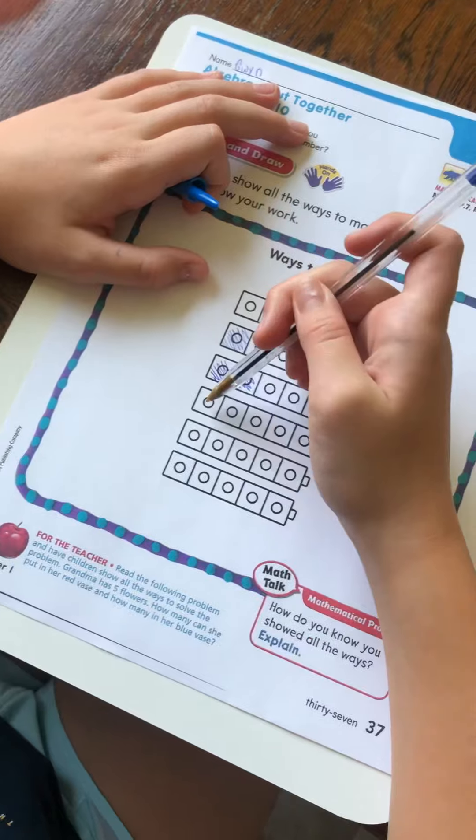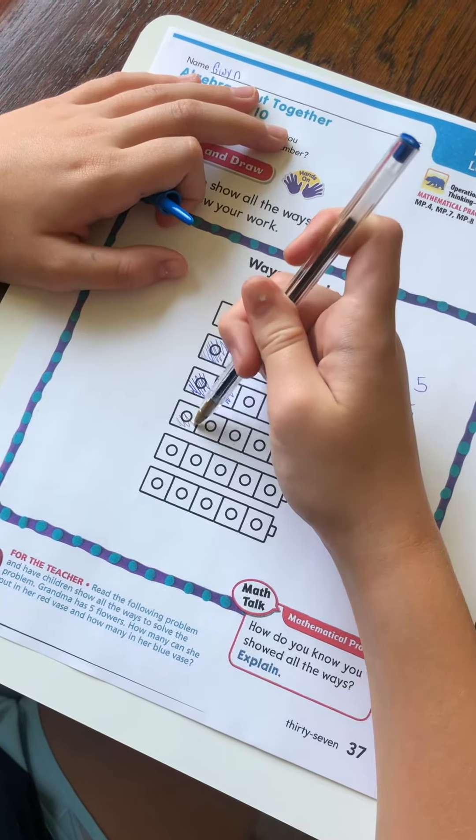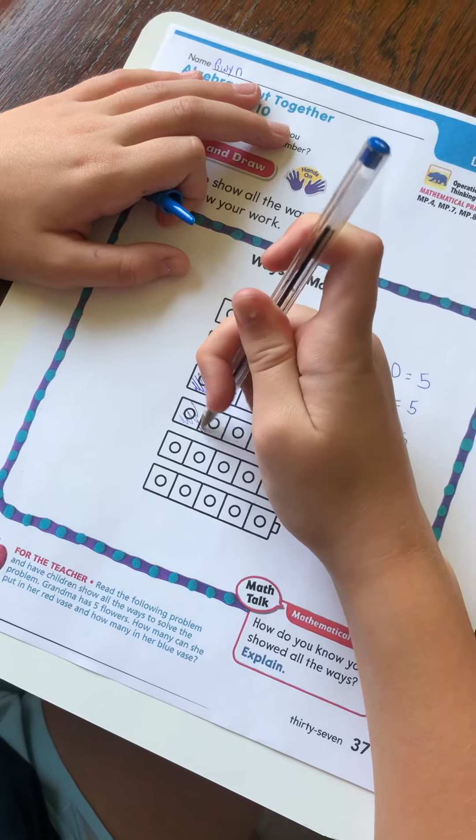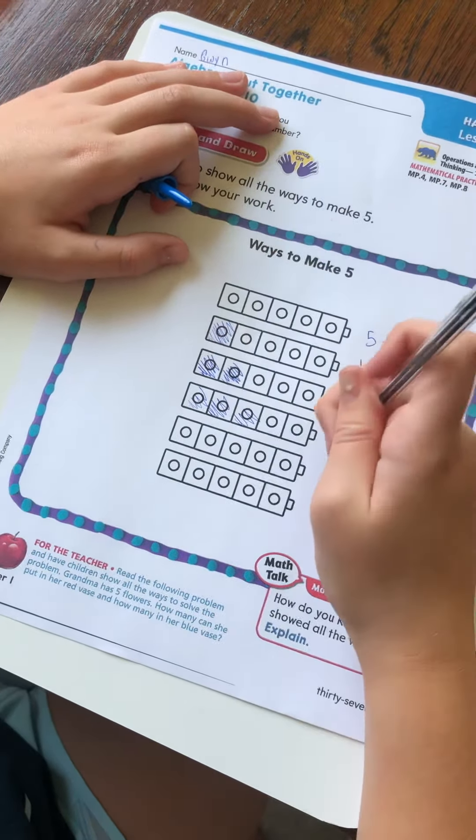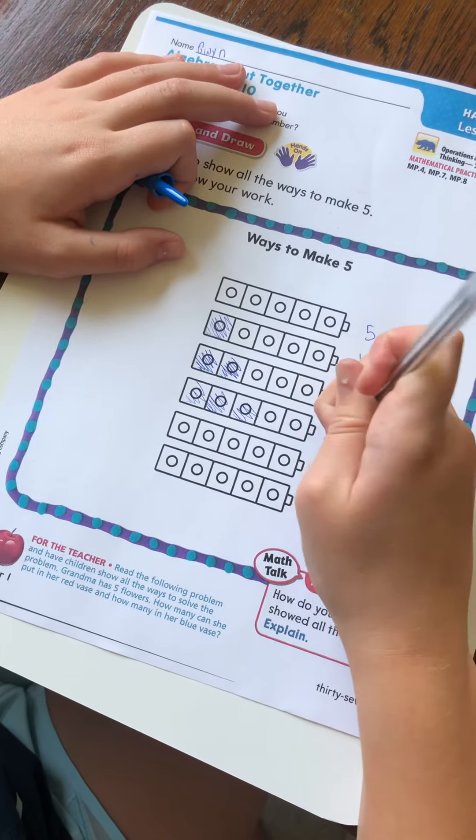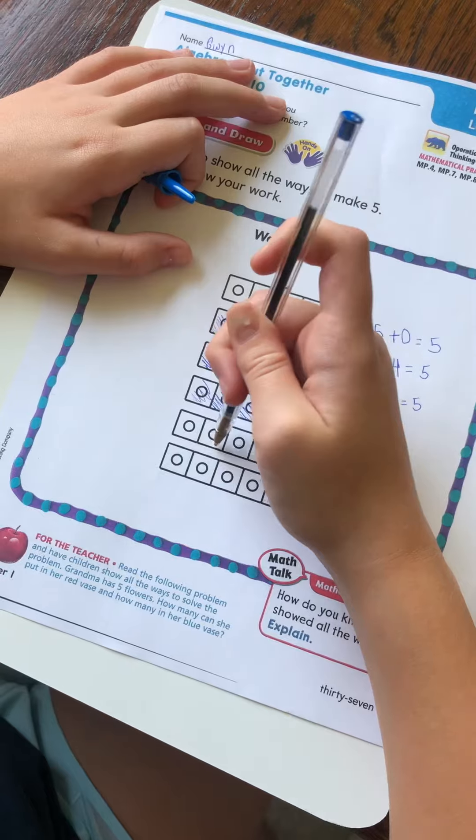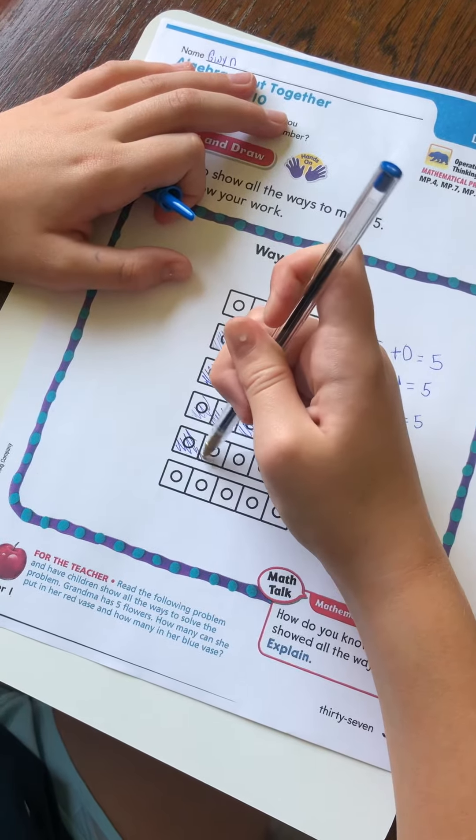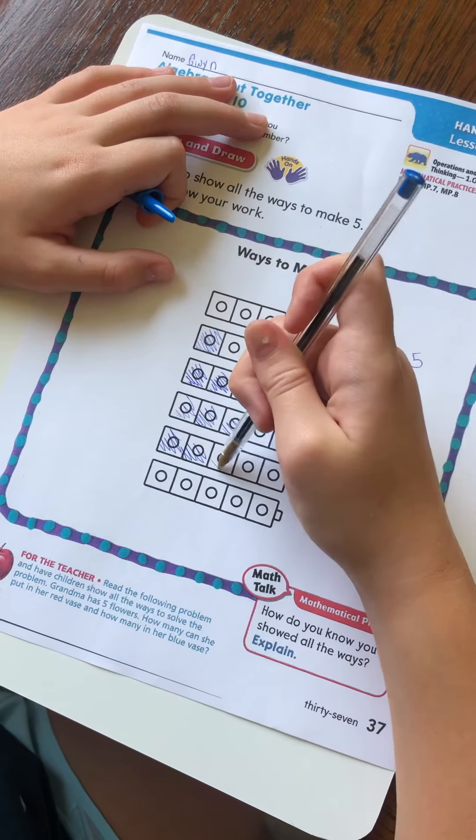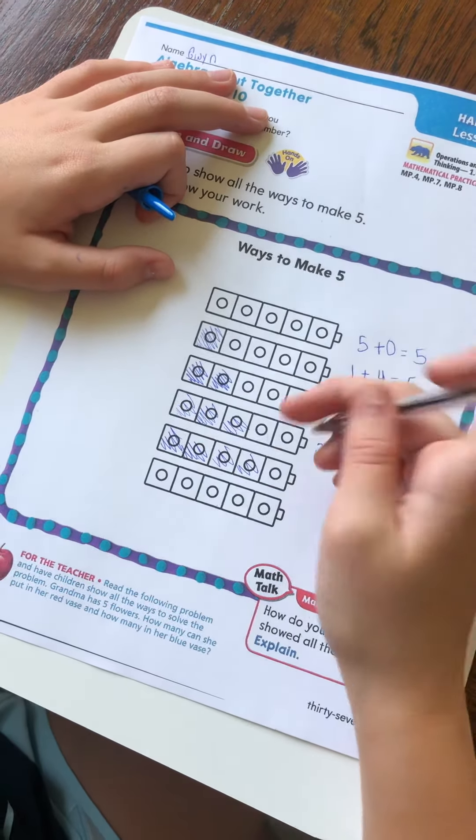Let's see. If I color in 1, 2, 3, okay so right here I can color in 1, 2, 3, which will make me do 3 plus 2 equals 5. If I color in 1, 2, 3, 4, I could do